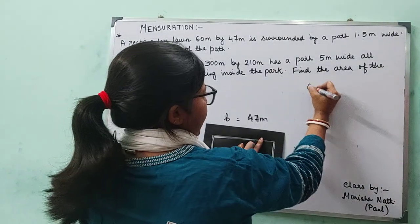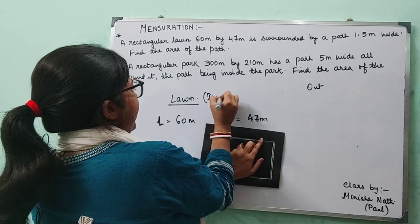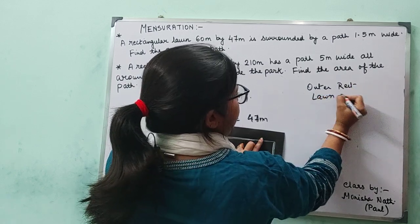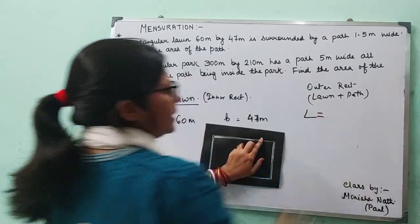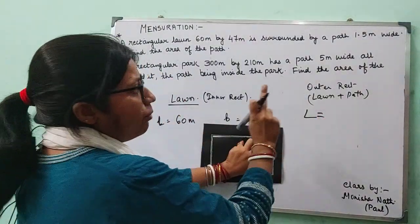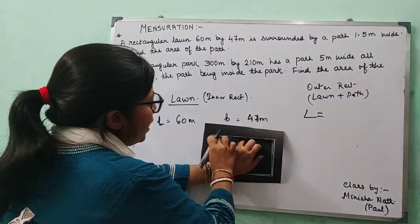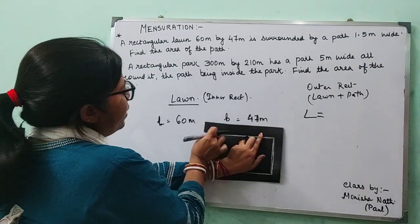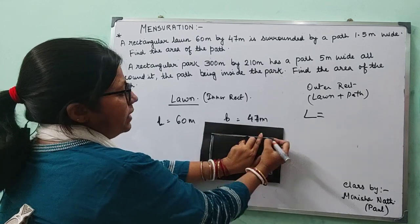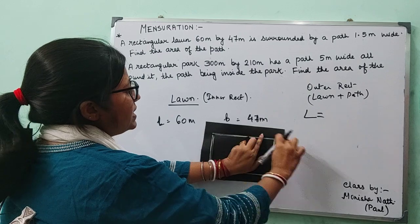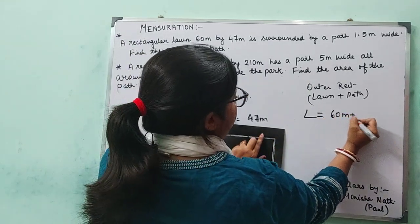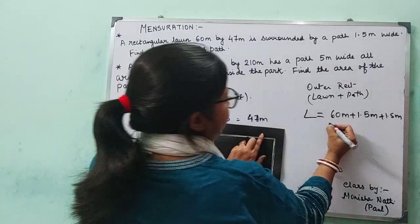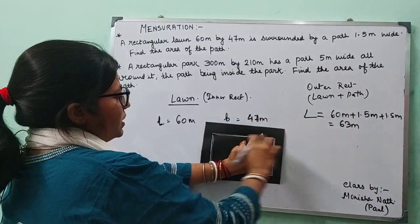This is the inner rectangle, or say the lawn, and this is the outer rectangle — the lawn plus the path. The path is 1.5 meter wide throughout. So if this is the length of the lawn or the inner rectangle, to this I add the width 1.5 on both sides — on the left and on the right. So the outer length is 60 plus 1.5 plus 1.5, which is 60 plus 3 — that is 63 meters.